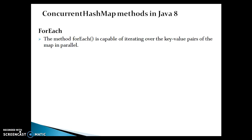Hello friends, Kishan is here again and welcome to this video tutorial. In this video, we are going to discuss the ConcurrentHashMap methods added in JDK 1.8. The first method we are going to talk about is forEach. The forEach method is capable of iterating over the key-value pairs of the map in parallel.